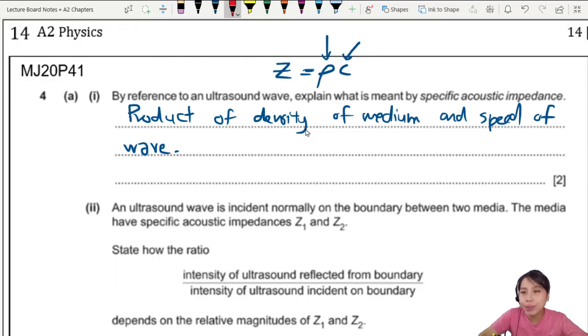Sometimes they give one mark, sometimes they give two. So the final product of... you talk about the product of density of medium and speed. That's one mark. Speed of ultrasound wave. I forgot to say wave in the medium. Then this one here will be the next mark.